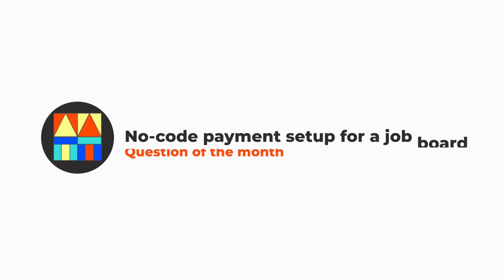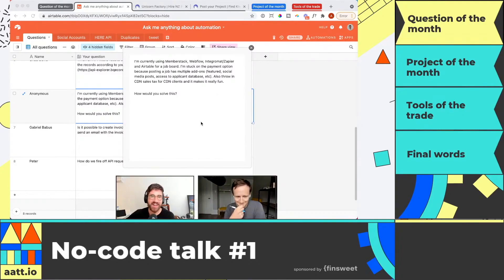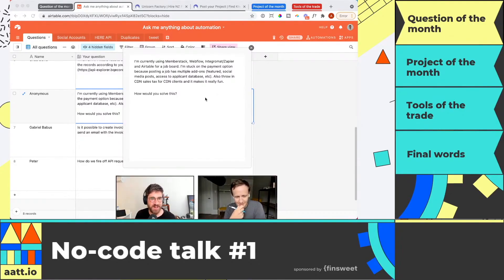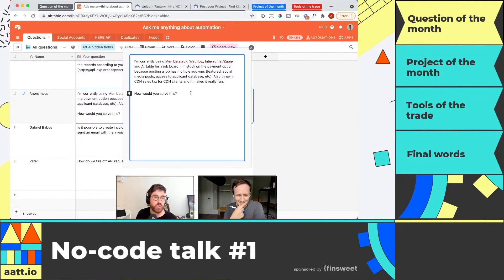Our first question comes from anonymous. This person didn't want to reveal what they're working on, but wanted to ask a question, which we're cool with — we're cool with anonymous questions. People have got billion dollar startups they're building here.